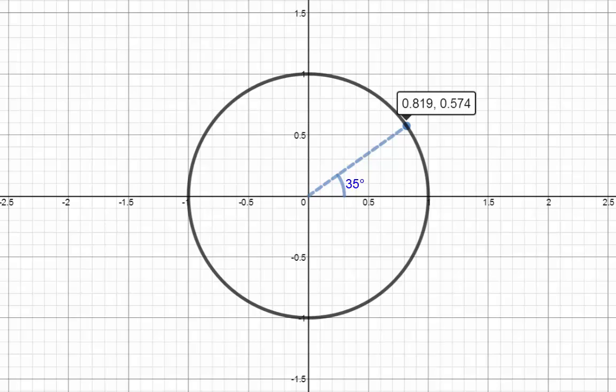It's a bit of a mouthful to say the x value of the point on a unit circle when the angle is 35 degrees. So instead of saying that, we'll call this cos 35 degrees. It's also a bit annoying to have to say the y value of the point on a unit circle when the angle is 35 degrees. So we'll call this sin 35 degrees.